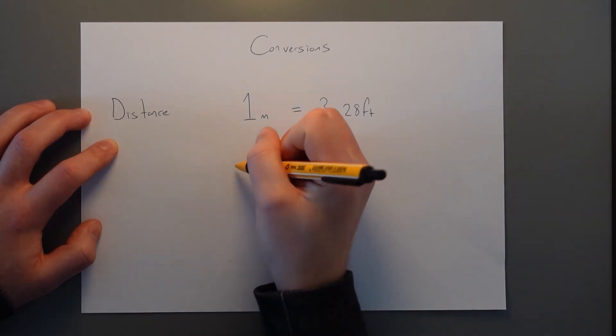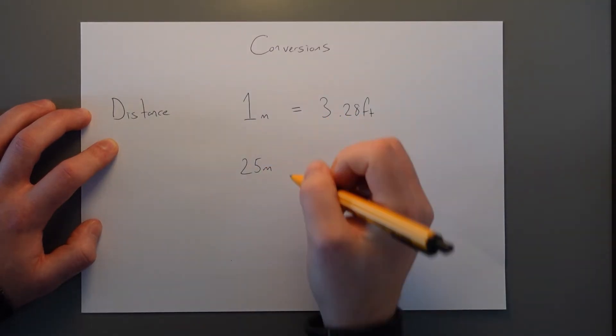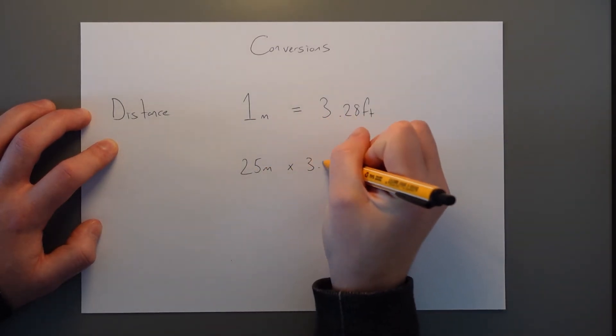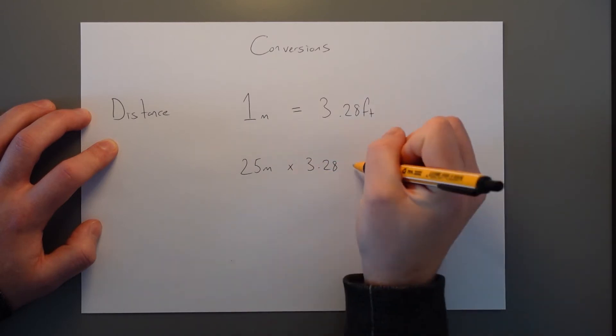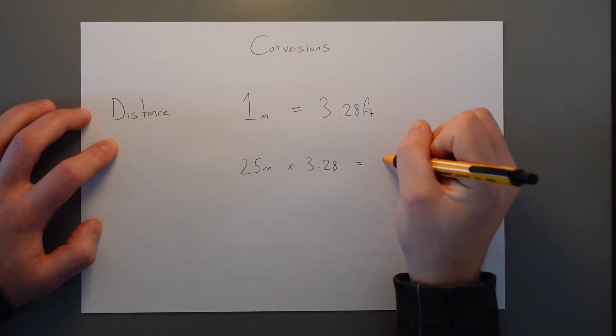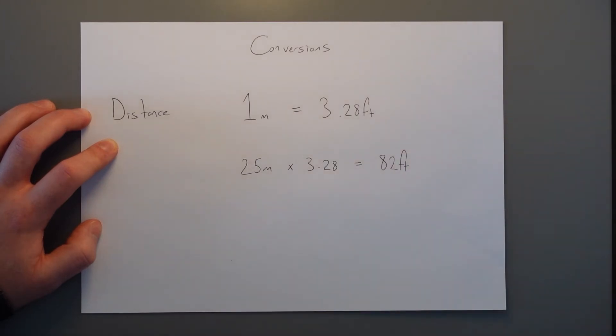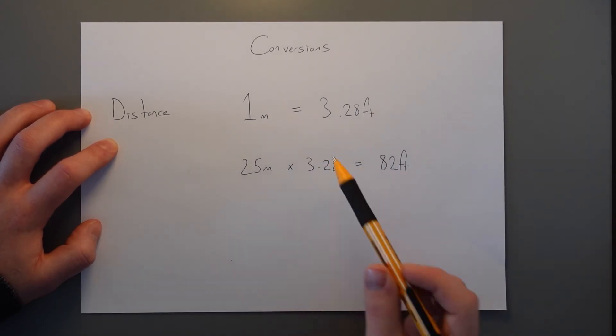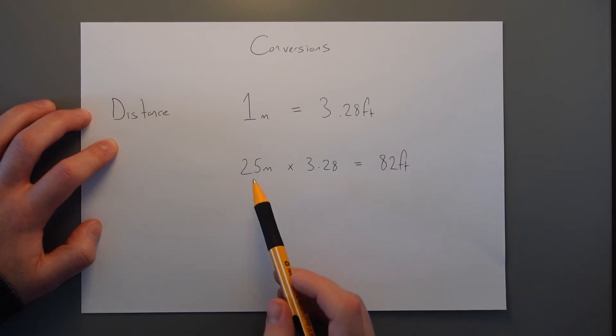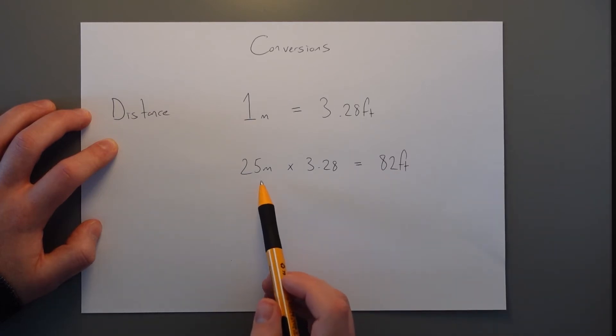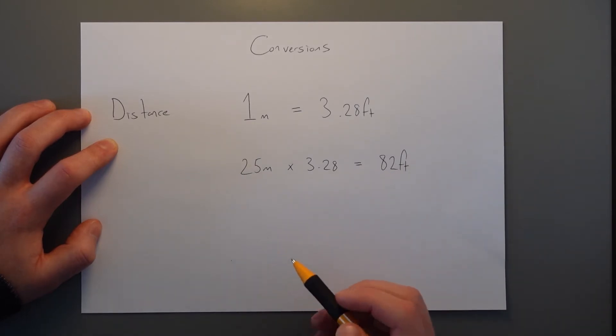For example, 25 meters, if we wanted to get that into feet, we would multiply by 3.28 and come up with a value of 82 feet. This is a good point to do an error check. We know that feet are the smaller of the distances because there are 3.28 of them in every meter. Therefore, there should be more feet than there are meters. That means we have to multiply and we get 82. Simple.